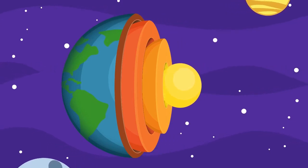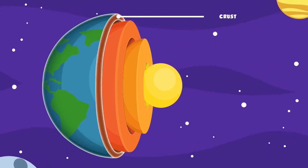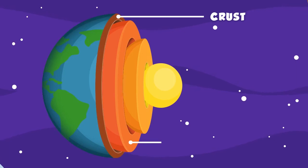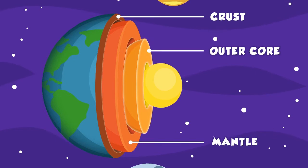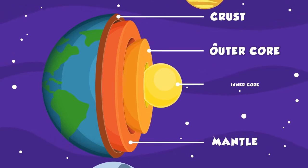Now, the Earth consists of four layers. The first layer is crust, second layer is mantle, third layer is outer core, and fourth layer is inner core.